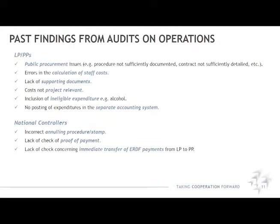What are the most frequent findings from the past programming period? On the level of lead partner or project partner: public procurement issues, for example procedures not sufficiently documented or contracts not sufficiently detailed; errors in the calculation of staff costs; lack of supporting documents; costs that were not project relevant; inclusion of ineligible expenditure, for example alcohol; and no posting of expenditures in a separate accounting system. On the national controller's level: incorrect annulling procedure or stamp, lack of check of proof of payment, and lack of check concerning immediate transfer of ERDF payments from lead partner to project partners.